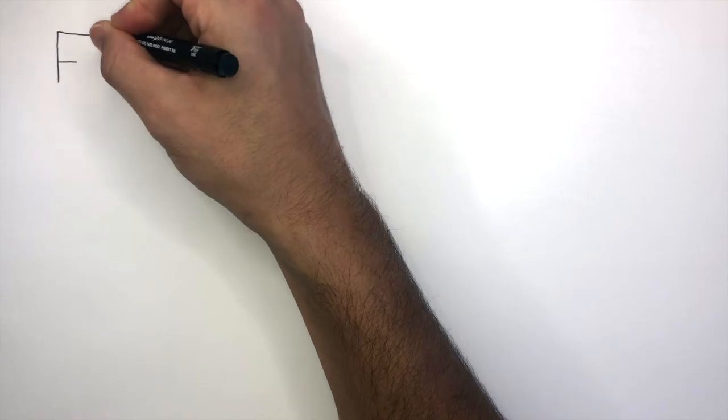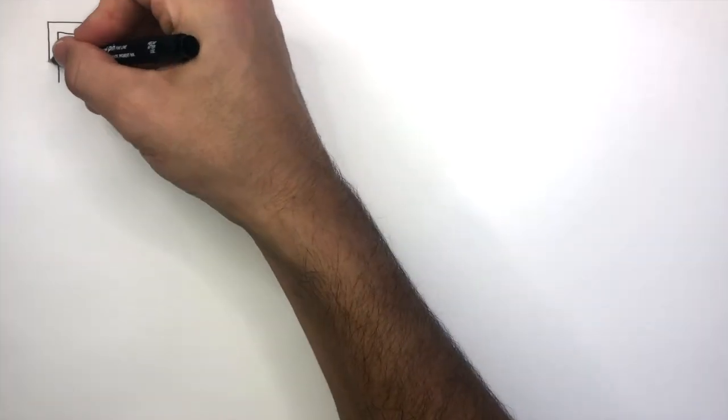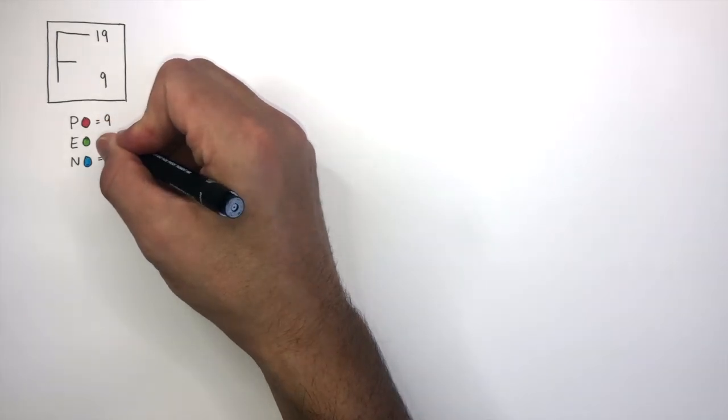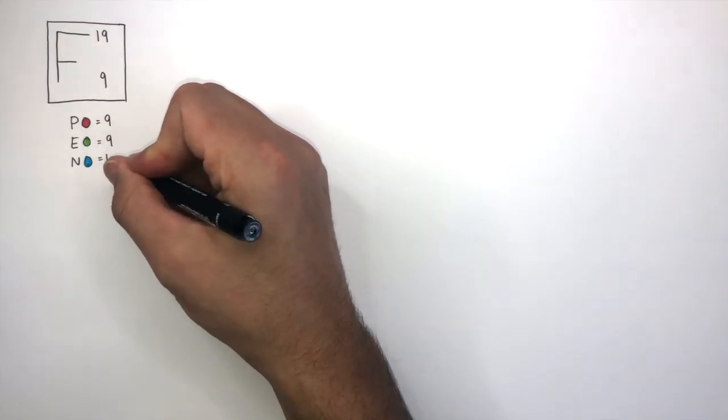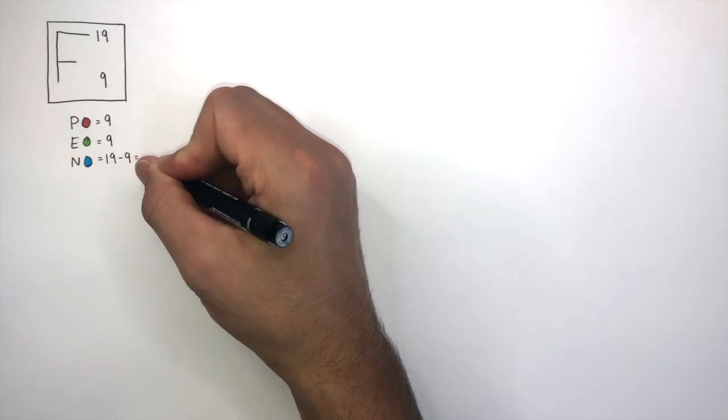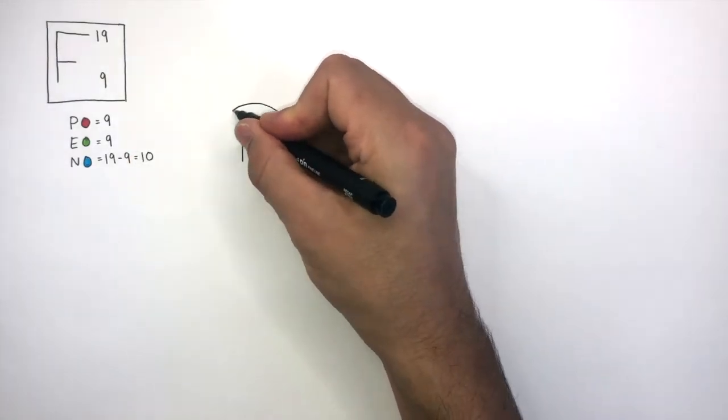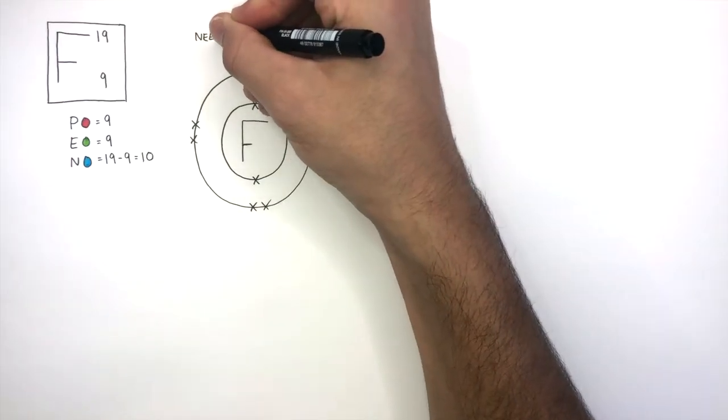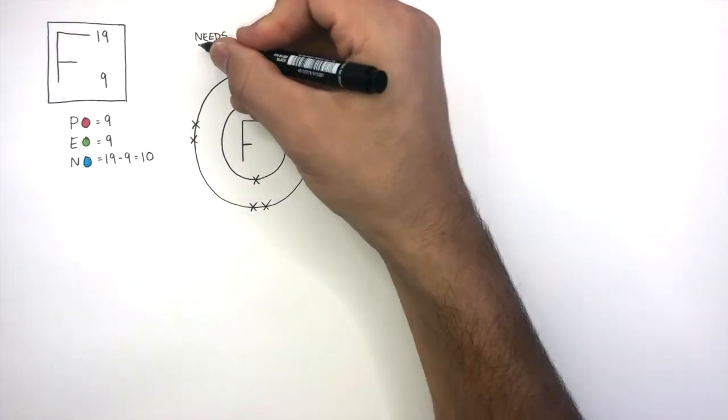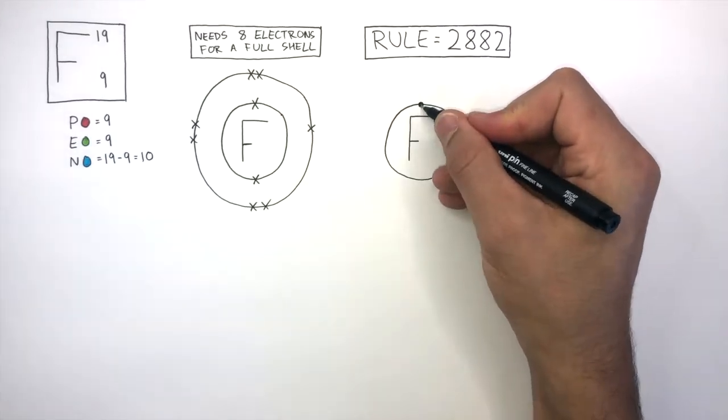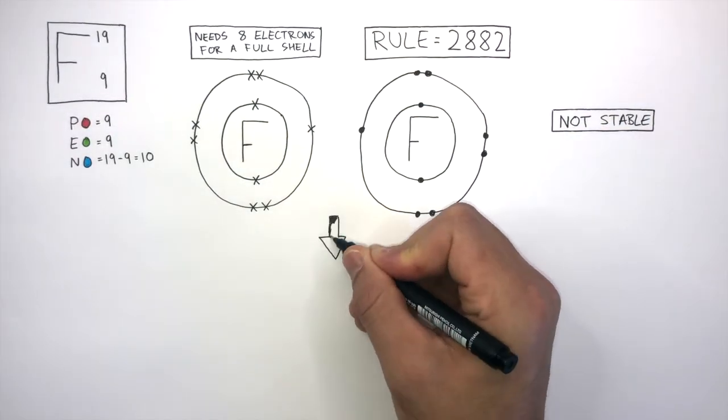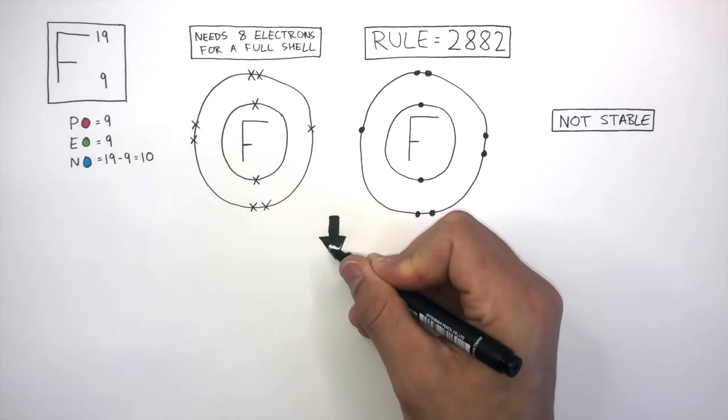So we know fluorine is a non-metal as it's to the right of the step line in the periodic table. It has 9 protons, 9 electrons and then 19 take away 9 means there are 10 neutrons. Fluorine is in group 7 so has 7 electrons in its outer shell. However, it needs 8 electrons for a full outer shell. This fluorine atom is not stable so will covalently bond with another fluorine atom to become stable.